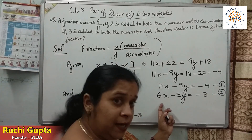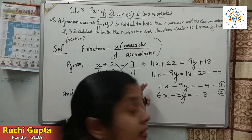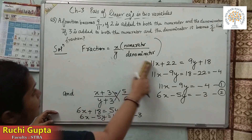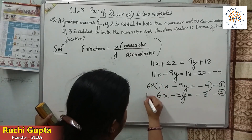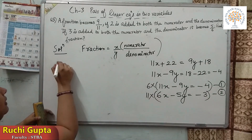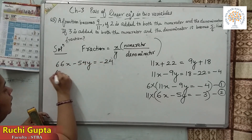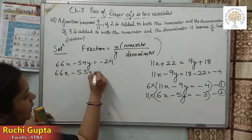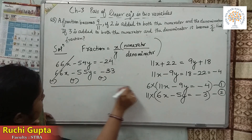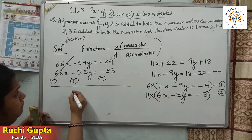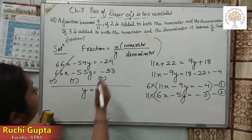Using the elimination method, we interchange the coefficients: multiply equation 1 by 6 and equation 2 by 11. This gives 66X minus 54Y equals minus 24, and 66X minus 55Y equals minus 33. Subtracting: 66X cancels with 66X. Then minus 54Y minus minus 55Y gives Y, and minus 24 minus minus 33 gives 9. So Y equals 9.